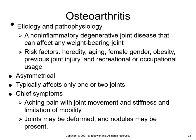The word arthritis, when literally translated, means inflammation of a joint. Osteoarthritis is a non-inflammatory degenerative joint disease that may affect any weight-bearing joint; the exact cause is unknown. Risk factors include heredity, aging, female gender, obesity, previous joint injury, and recreational or occupational usage. People with osteoarthritis seem to produce less collagen to strengthen cartilage and protect joints. With time and use, joints become thickened and withstand weight-bearing poorly, with consequent damage to the cartilage. The synovial cells then release enzymes that further cause cartilage degeneration.